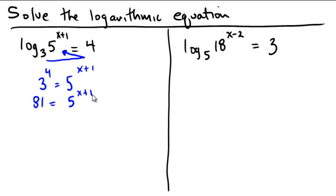So next we'll take a logarithm of both sides and say log 81, or ln of 81, equals ln of 5 to the power of x plus 1. According to logarithm rule number 3, that exponent gets pulled out in front, so we'll get ln of 81 equals x plus 1 times ln of 5.